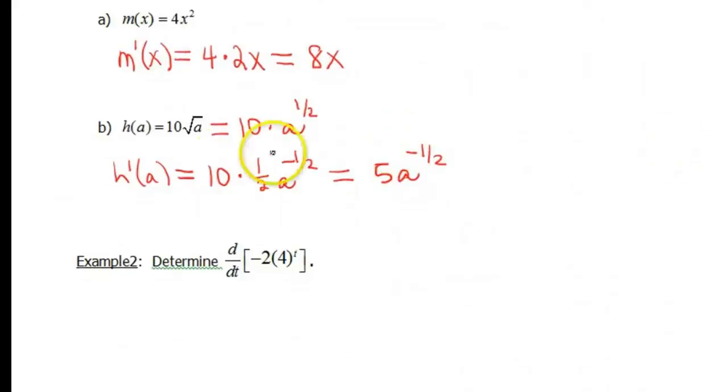Okay, next example. I want to determine d over dt, so that means the derivative with respect to t, of negative 2 times 4 to the t power. So my negative 2 is my coefficient, so that's gonna be like my k. But this one is 4 to the t.